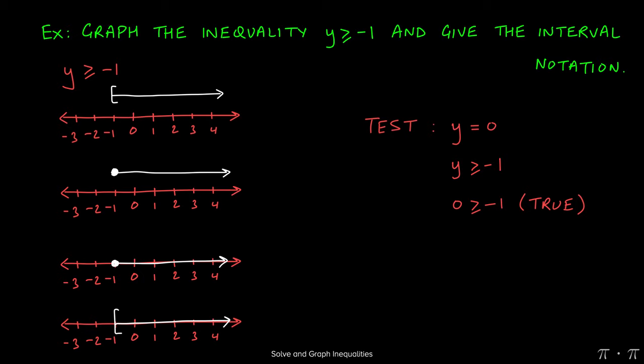That means that the arrow should start at negative 1 and go towards 0, which is to say it should go to the right, so we've done this problem correctly. Had we chosen a point on the other side, say negative 2, negative 2 is greater than or equal to negative 1 would be a false statement, which means that the arrow should go in the other direction, which further confirms that we've done this problem correctly.